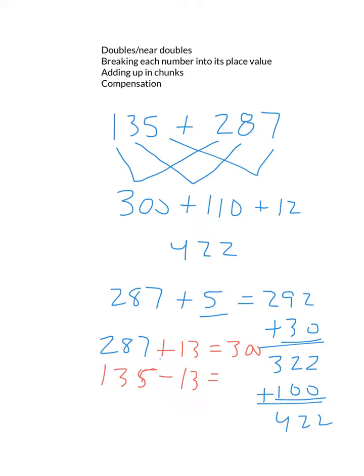The inverse. So that would give us 122. What's 300 plus 122? Again, 422.